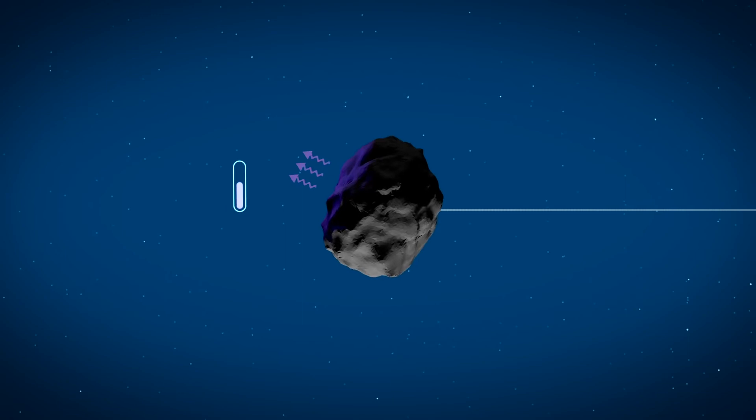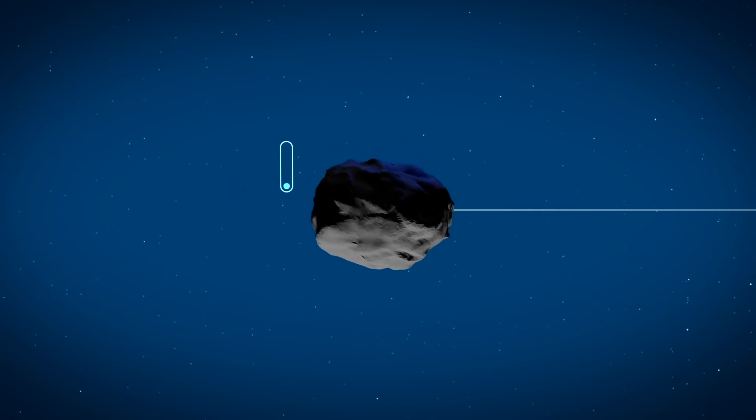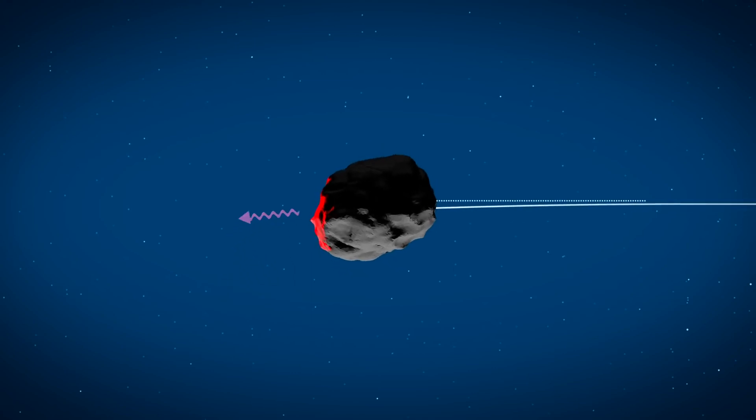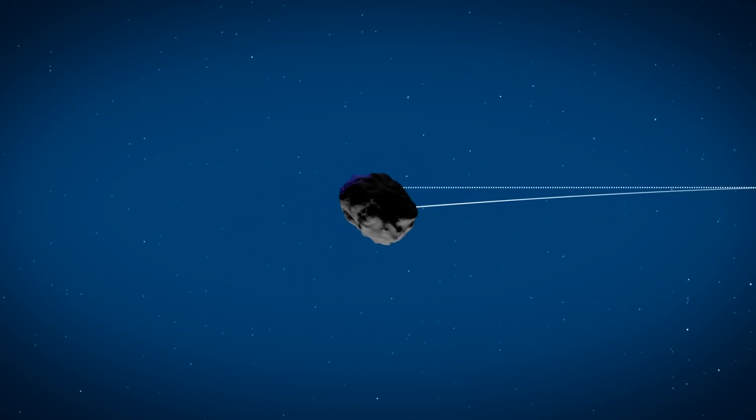During the night, however, the surface cools down, emitting the heat it absorbed as radiation. This radiation exerts a force on the asteroid, acting as a sort of mini-thruster that can slowly change the asteroid's direction over time.